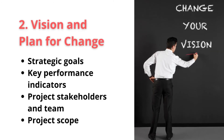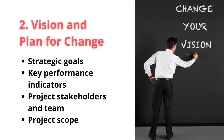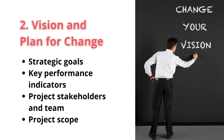Step number two: vision and plan for change. There are four key points — you have to rewrite your vision so as to adopt change, realign your strategic goals, check key performance indicators, project stakeholders, and team, and revisit the project scope to determine how far you would like to move forward.